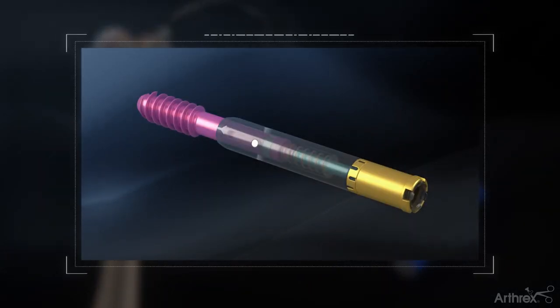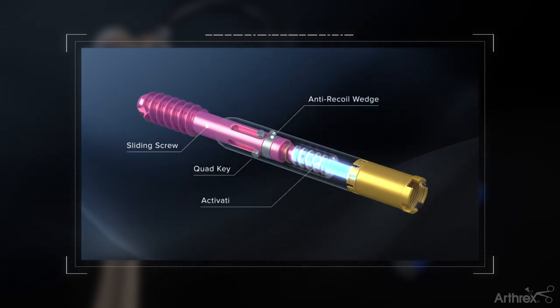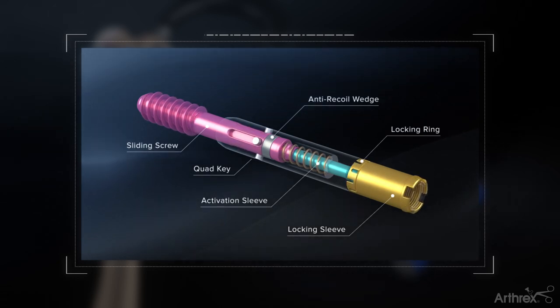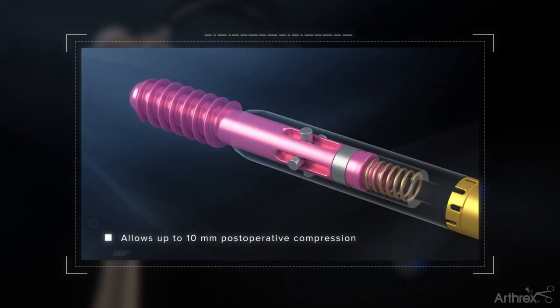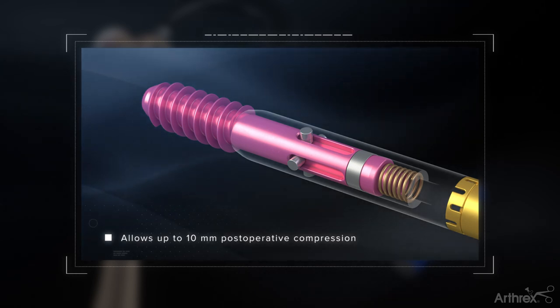The 10.5 mm telescoping lag screw features many innovative internal features and mechanisms and is locked into the nail via expansion of the circumferential locking ring. The design allows up to 10 mm of post-operative compression within the lag screw to prevent lateral thigh pain.